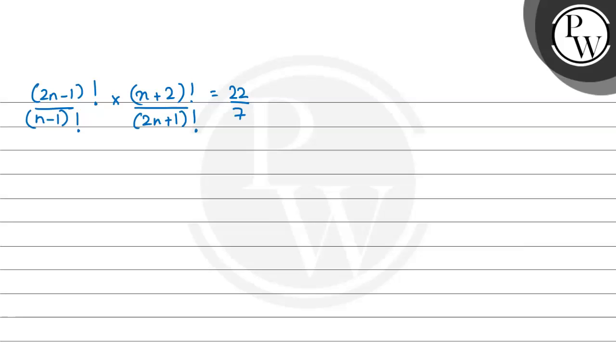Now, 2n plus 1 is obviously greater than 2n minus 1, and n plus 2 is obviously greater than n minus 1. So, just have a look very carefully. 2n minus 1 factorial and n minus 1 factorial.